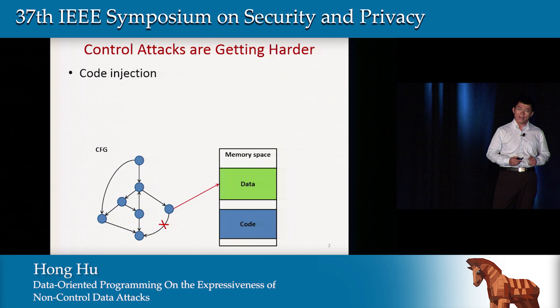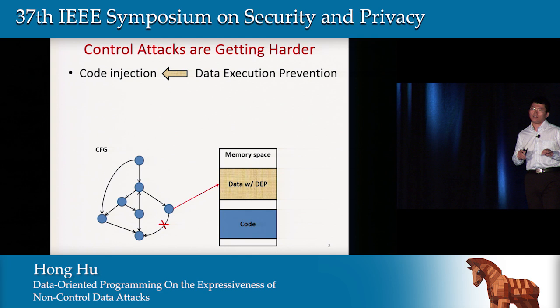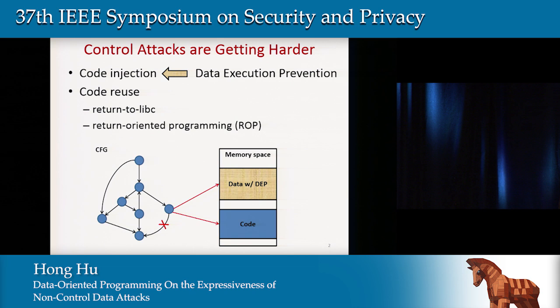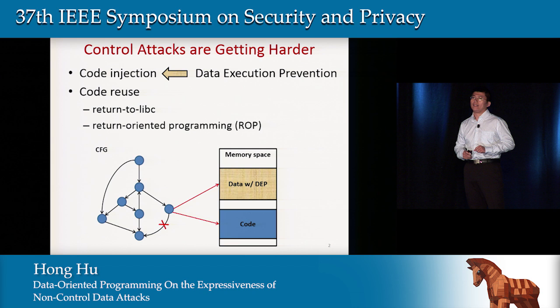But now in the system, we have data execution prevention that tries to make the data segment not executable. So attackers instead are going to make the program jump into the code section to reuse existing code to mount attacks — for example, the return-to-libc attack and return-oriented programming.